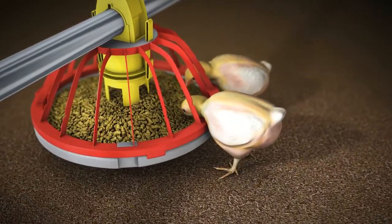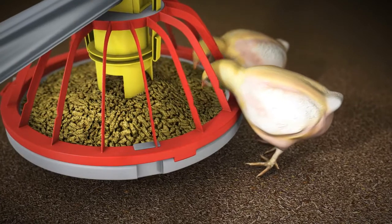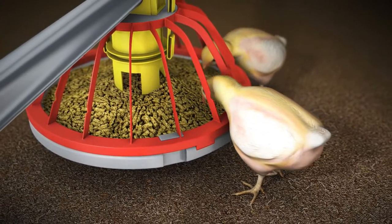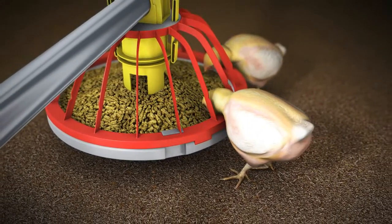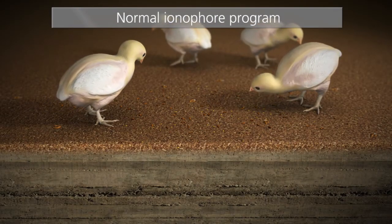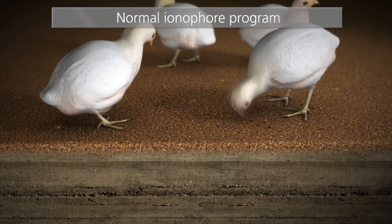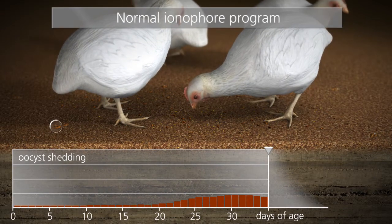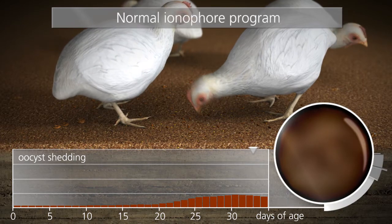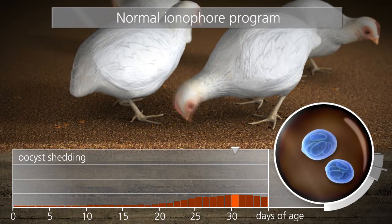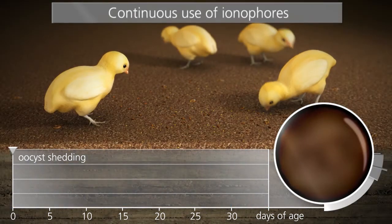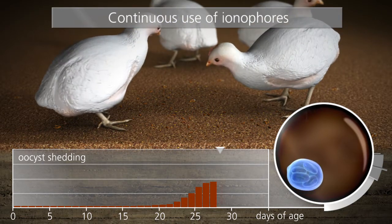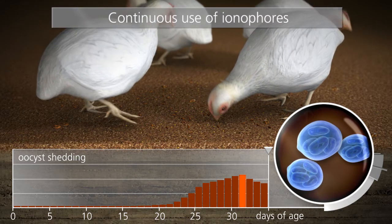In-feed medication with anti-coccidials that suppress the life cycle of Eimeria parasites represents a convenient, well-established treatment method for coccidiosis. Broilers are routinely given anti-coccidials until just before slaughter. However, normal ionophore programs allow some of the parasites to escape suppression and reproduce, causing delayed oocyst shedding and very mild lesions. The continuous use of ionophores results in reduced efficacy, leading to even more oocyst shedding and more significant lesions during the most vulnerable period of broiler performance.